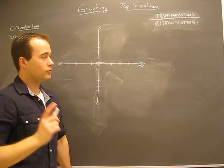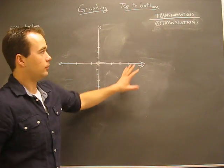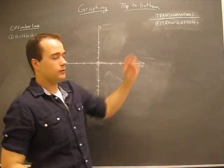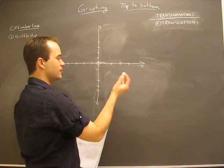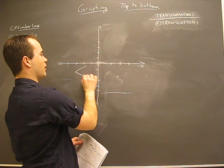All right, now we're going to get into some trickier stuff. Graphing top to bottom. We're going to talk about transformations. What a transformation means is that if you have something - whatever it is, a line, a triangle, whatever...